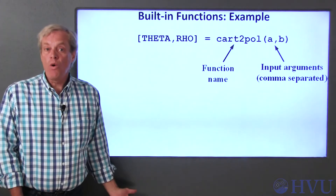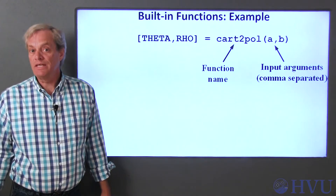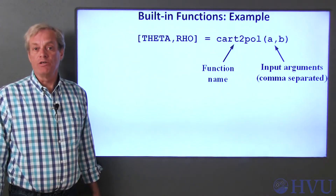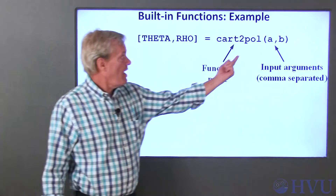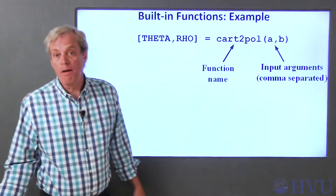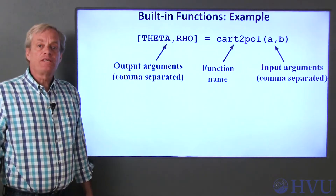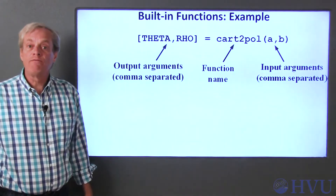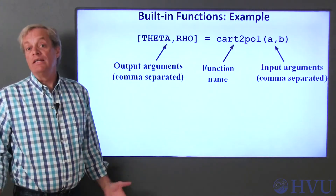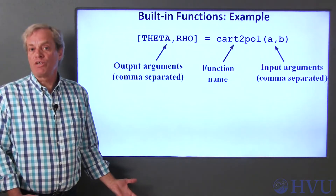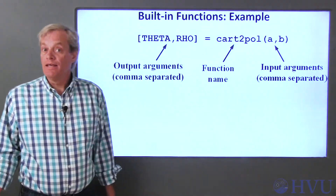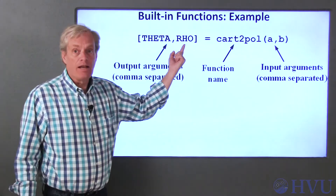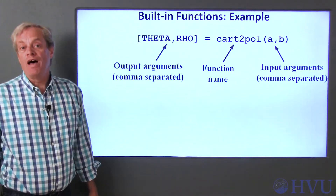The function doesn't know any other information rather than what you list here. Also, the function doesn't know or care what variable names you use in the input argument list — you can call these variables A and B, X and Y, or Joe and Bob. The function accepts a list of output arguments in square brackets. These are the only variables that the function returns to you; it doesn't add any variables to your workspace other than these. Again, the function doesn't care what the names are — they can be named theta and rho, radius and angle, or any other two valid variable names.